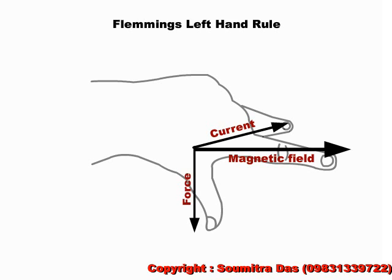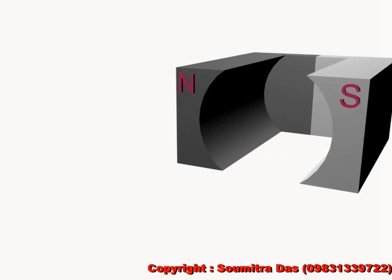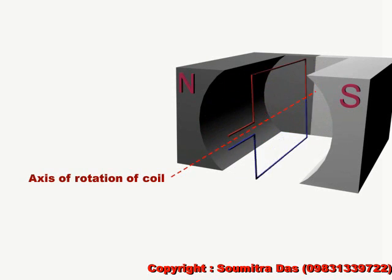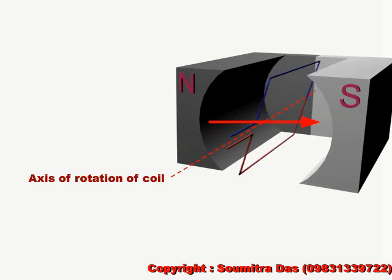then the thumb points in the direction of the force experienced by the conductor. This is the principle of electric motor. It contains a horseshoe type field magnet with concave poles, an armature coil which is rectangular in shape. Notice that the axis of rotation of the coil is perpendicular to the direction of the magnetic field.